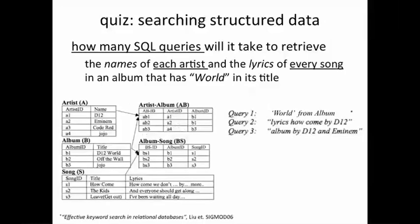Here's how we could do this. We first retrieve the album from the album table. Then we have to traverse this table to find out all the songs in that album and their lyrics. We also have to find out all the artists that compose album B1 from the artist-album table, and then retrieve the actual artist names. Each of these can be done with a single query if you allow a one-table traversal join.